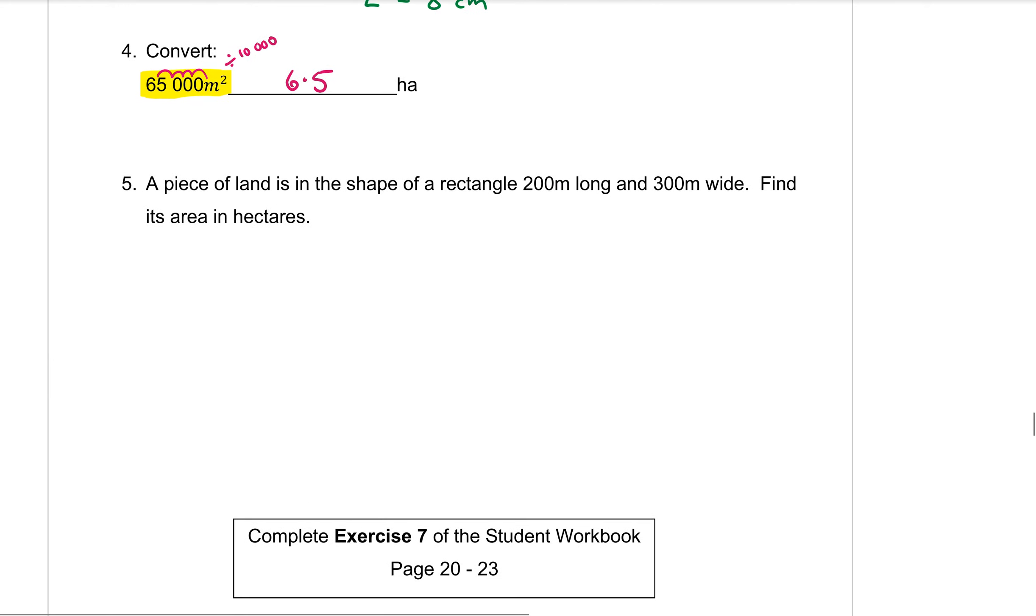One more question, a piece of land is in the shape of a rectangle that is 200 meters long and 300 meters wide. So sometimes it's good to draw yourself a little diagram just so that you can visualize what is going on. So 200 meters on one side and 300 meters on the other side. Find its area in hectares. Now to find an area I know I need to use the formula for a rectangle which is A equals BH. Then I sub in so that's going to be 300 times 200 and I calculate that which is 60,000 meters squared.